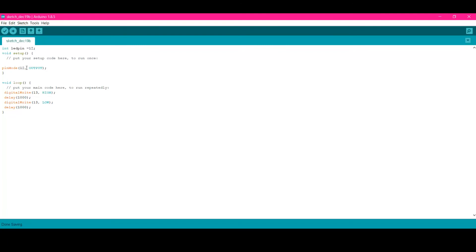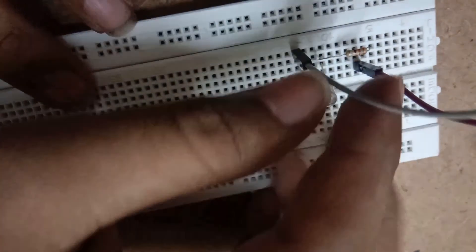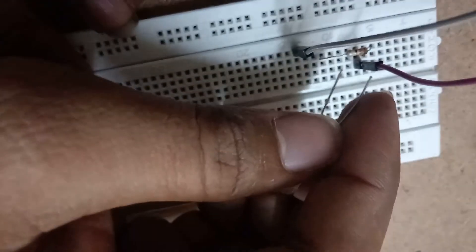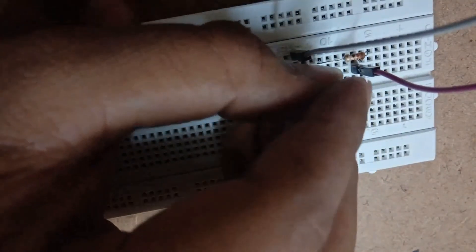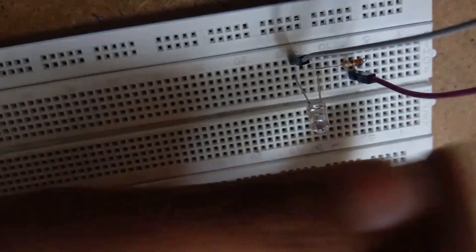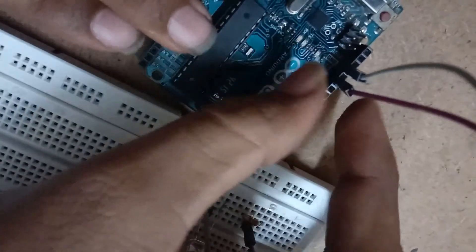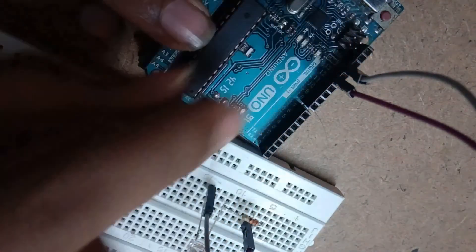After making connections, click on this tick button to upload the code. Let us go to connections. This is a LED. Longer pin is anode and shorter pin is cathode. Connect a 330 ohms resistor in series with LED. Positive pin of the LED is connected to pin 12 of the Arduino board. Negative pin is connected to ground. And upload the program.